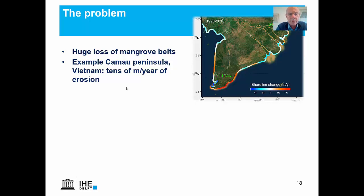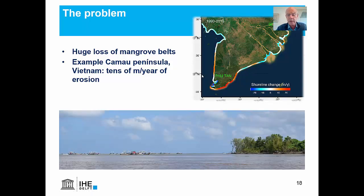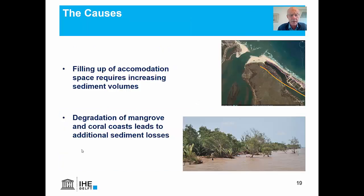Worldwide in tropical areas there is a huge loss of mangrove belts. Here's an example from the Kamau Peninsula in the south of your country — tens of meters per year of erosion here. This scale runs from minus 25 to 25 meters per year, which is huge. You can see this mangrove area and the ships lying there — this whole area used to be land some decades ago. This is from the Foutan region.